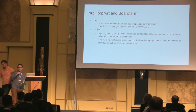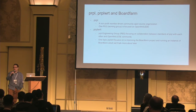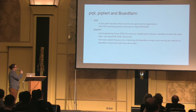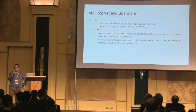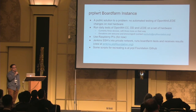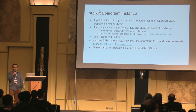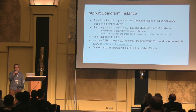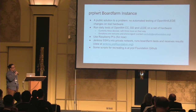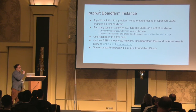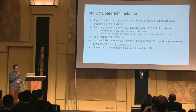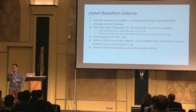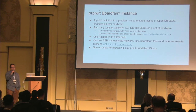Eric is now speaking about the Purple WRT board farm. Purple runs an instance of board farm through the Purple WRT group, trying to develop a public solution for automated testing of OpenWRT and LEDE changes on real hardware — something that didn't have a public solution before. They currently have three pieces of hardware with three more on the way. They run through Jenkins, do a build every day, and use Raspberry Pis instead of VMs currently.